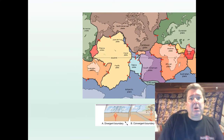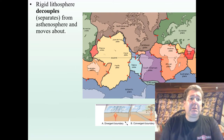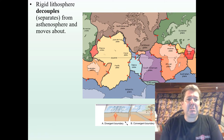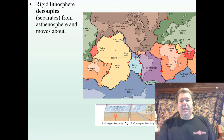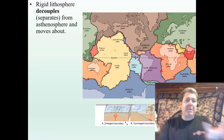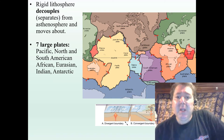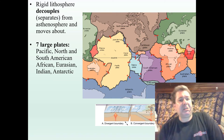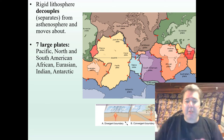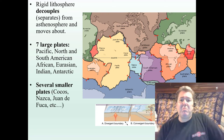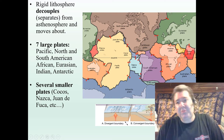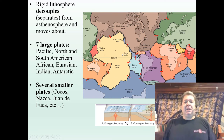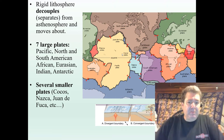Looking at our plate tectonics theory modernly, we have this rigid lithosphere which decouples — meaning it separates from the asthenosphere and moves about on it. Today we have around seven larger plates: the Pacific, North American, South American, African, Eurasian, and Antarctic plates, and then a number of minor plates like the Cocos plate, the Juan de Fuca, and the Arabian plate. These minor plates often get bumped and squished around by some of the larger plates.